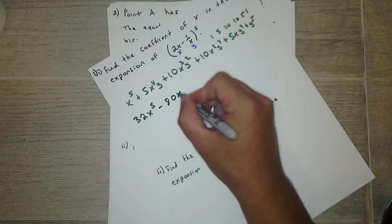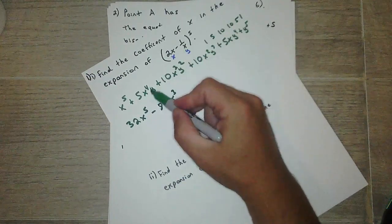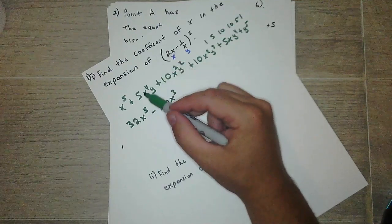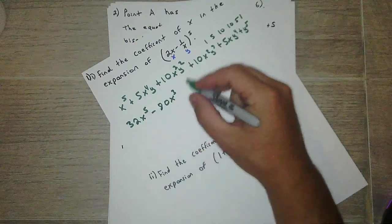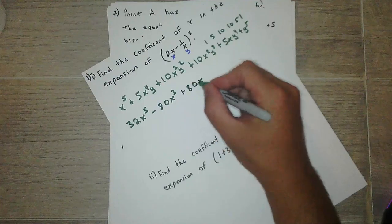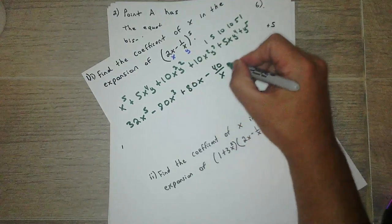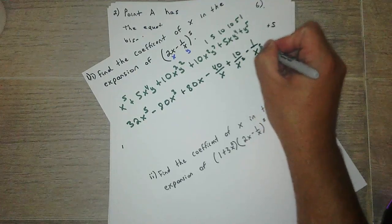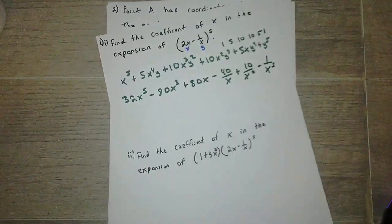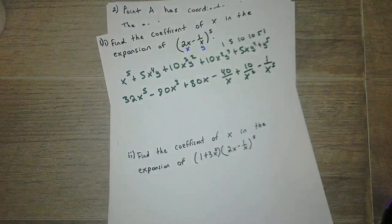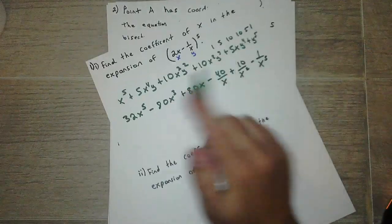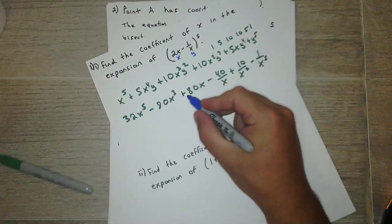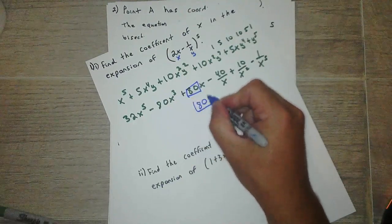Minus 80x^3, because 1/x for the y cancels one of these x's. And then I have 2^4 times 5, that's where the 80 comes from. Plus 80x, minus 40/x, plus 10/x^2, minus 1/x^5. So if you plug them all in correctly, that's what you'll get. So it wanted the coefficient of x. We only have one term with x in it, that's here. So that's where they got the 80 from.